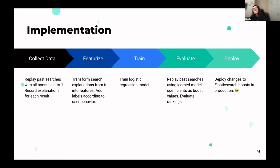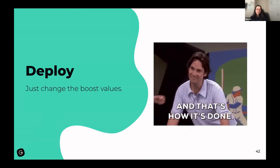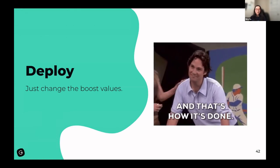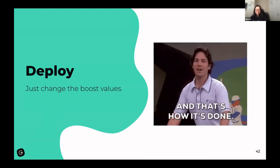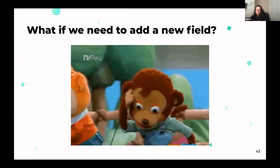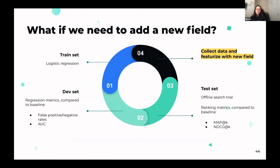The most important step: deployment. Once you've identified a satisfactory set of boost values, it's time to deploy them to production — and that is very easy, because if your search is already set up, all you need to do is change the boost values. This process can be repeated many times: if you need to add a new field or make changes to the query, just recollect data with the new field and run the process again — it's fast because all the code has already been written and it's an established process.